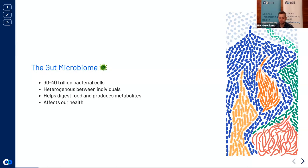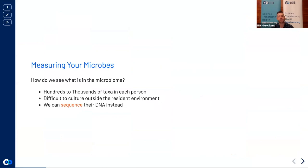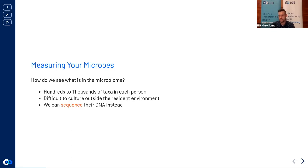The composition of bacteria in the gut microbiome significantly affects our health, which leads to the question: how do we know what's in someone's microbiome? There are hundreds to thousands of taxa per individual and they are difficult to culture outside the large intestine. Instead, we take a fecal sample, extract the DNA, read that DNA, and use it to determine what microbes are present and in what abundances.